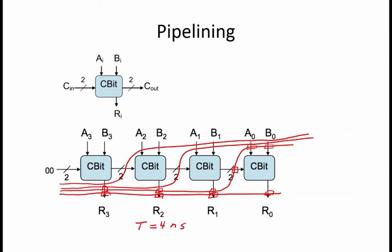The latency of this pipeline circuit is equal to the number of pipeline stages — four in this example — times the clock period. So the latency is 4 times 4 nanoseconds, which equals 16 nanoseconds. The throughput of a pipeline circuit is 1 divided by the clock period, so throughput is 1 over 4 nanoseconds.